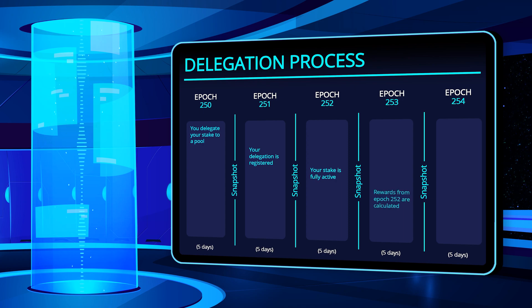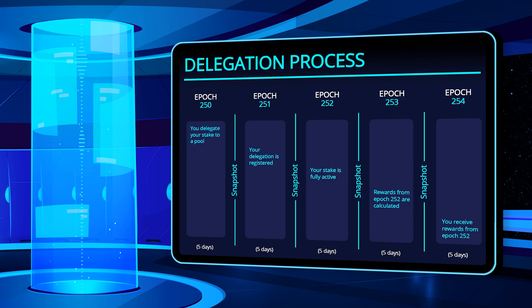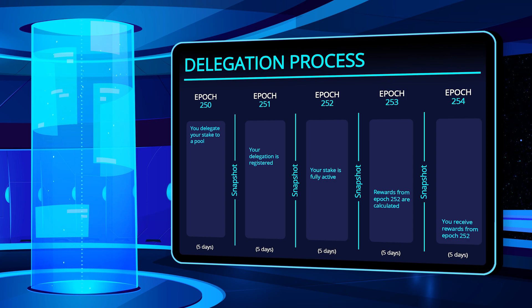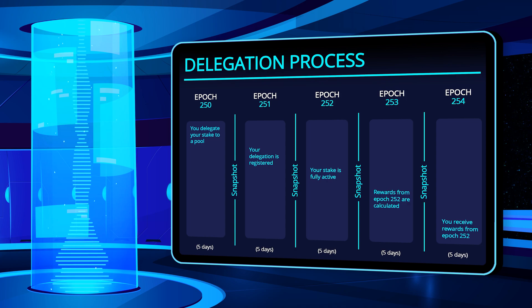In epoch 253, the rewards are now calculated for the blocks produced in the previous epoch 252. In epoch 254, you will receive your personal rewards from the penultimate epoch — in this example, epoch 252. So before you can receive your rewards, it will take at least 15 to 20 days.